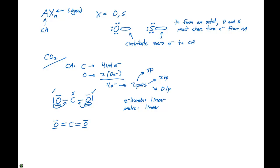Carbon now has two double bonds — one on each side — giving a total of eight valence electrons. Each oxygen has four lone pair electrons and four bonding electrons, so each oxygen has an octet as well. We need to form a double bond to complete this molecule, and it is non-polar because it is completely symmetric.